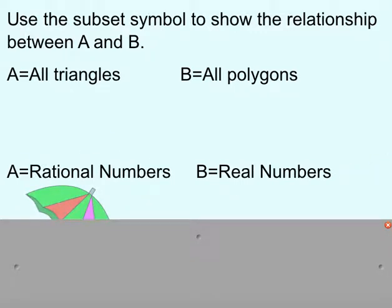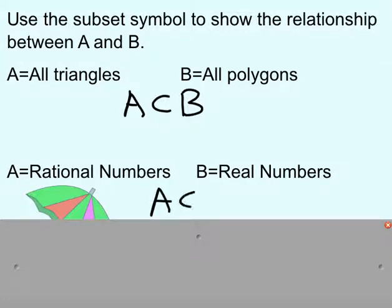Let's see a couple more. All triangles and all polygons — are all triangles a subset of all polygons, or vice versa? All polygons has a lot more, but it does contain triangles, so triangles are a subset of polygons. And rational numbers and real numbers: real numbers include both irrational and rational numbers, so rational numbers is a subset of the real numbers, because we can find all rational numbers within the real numbers.